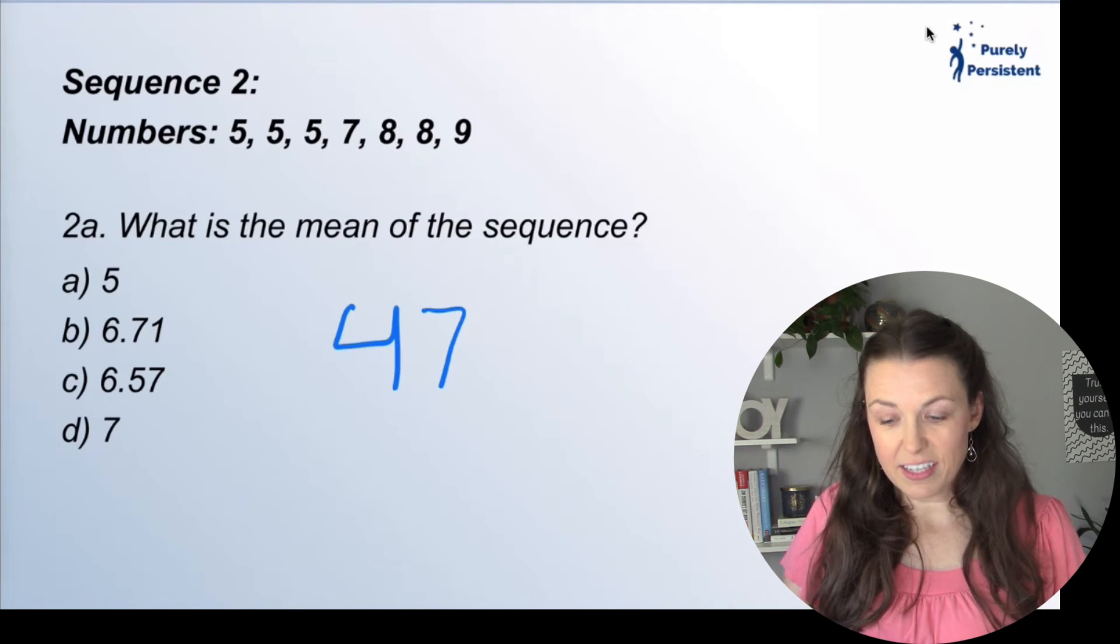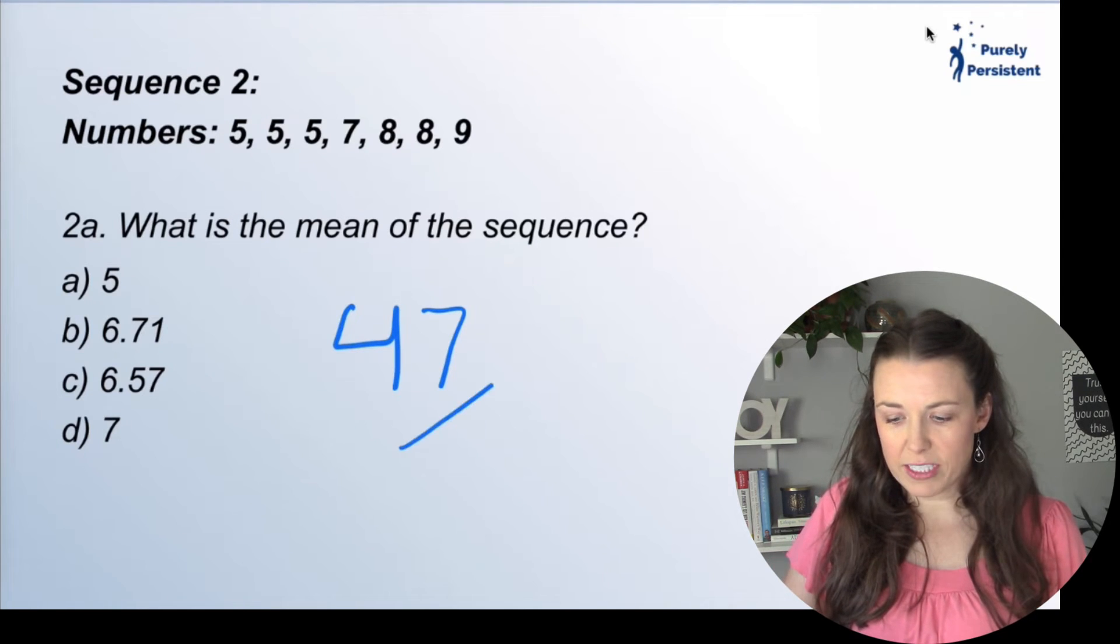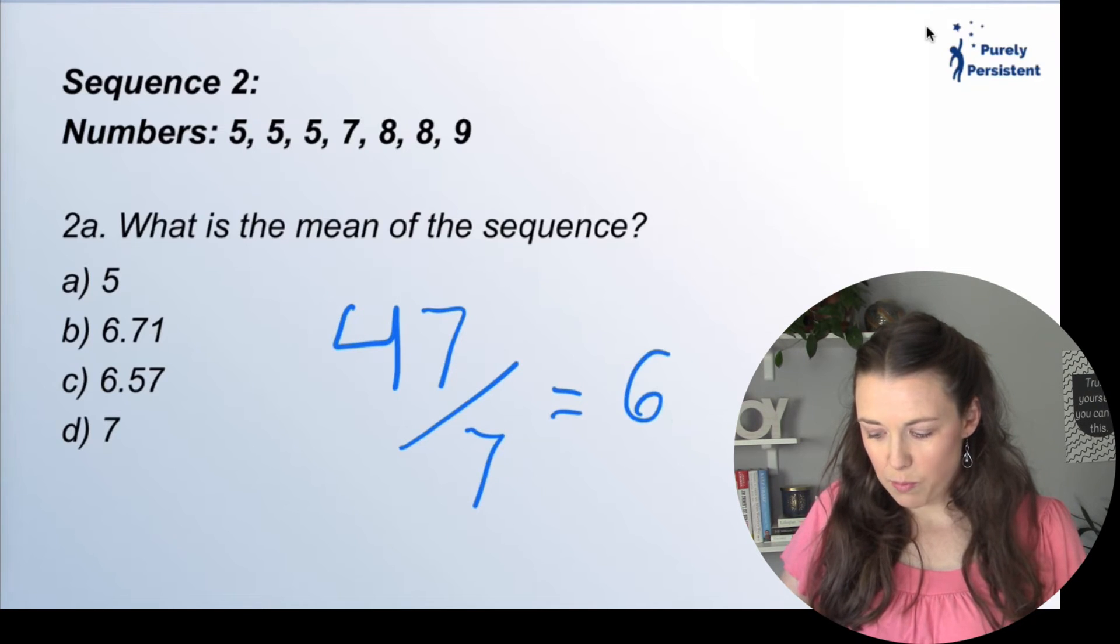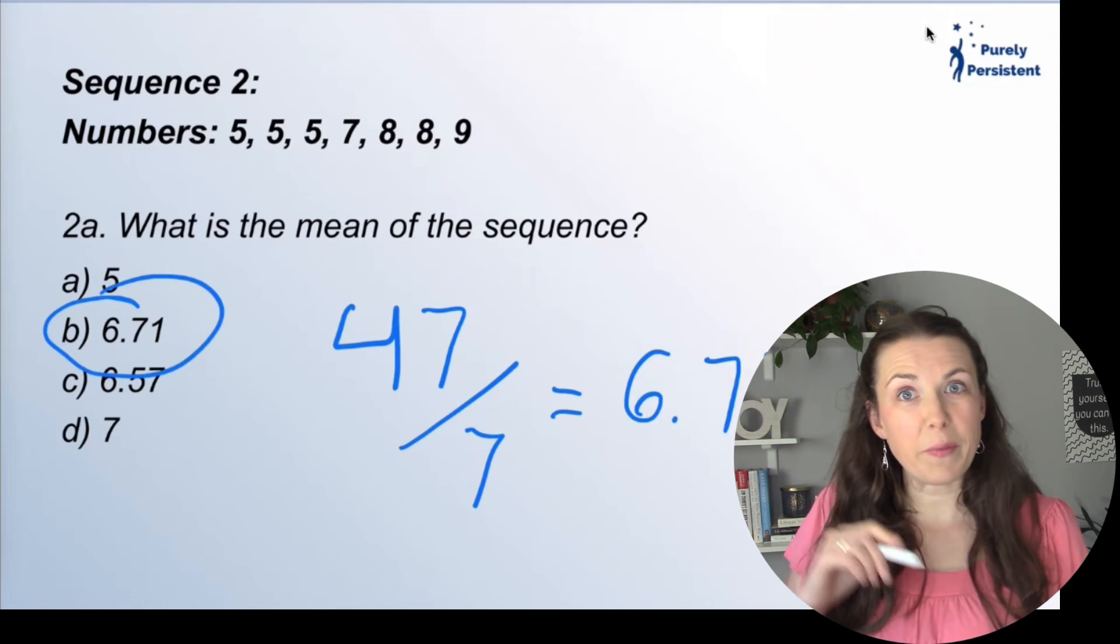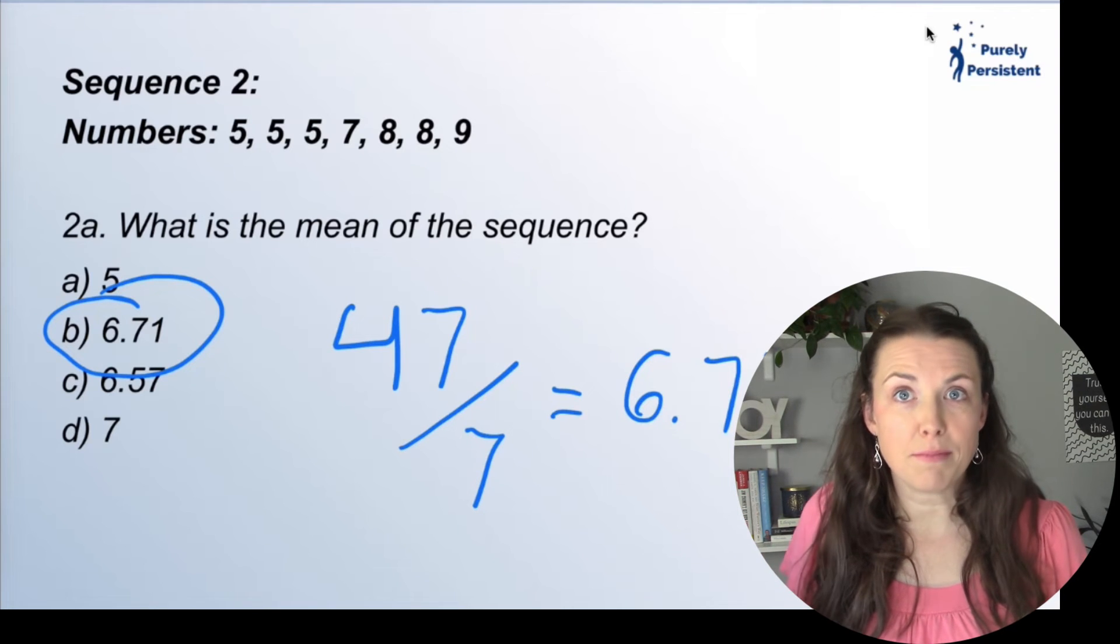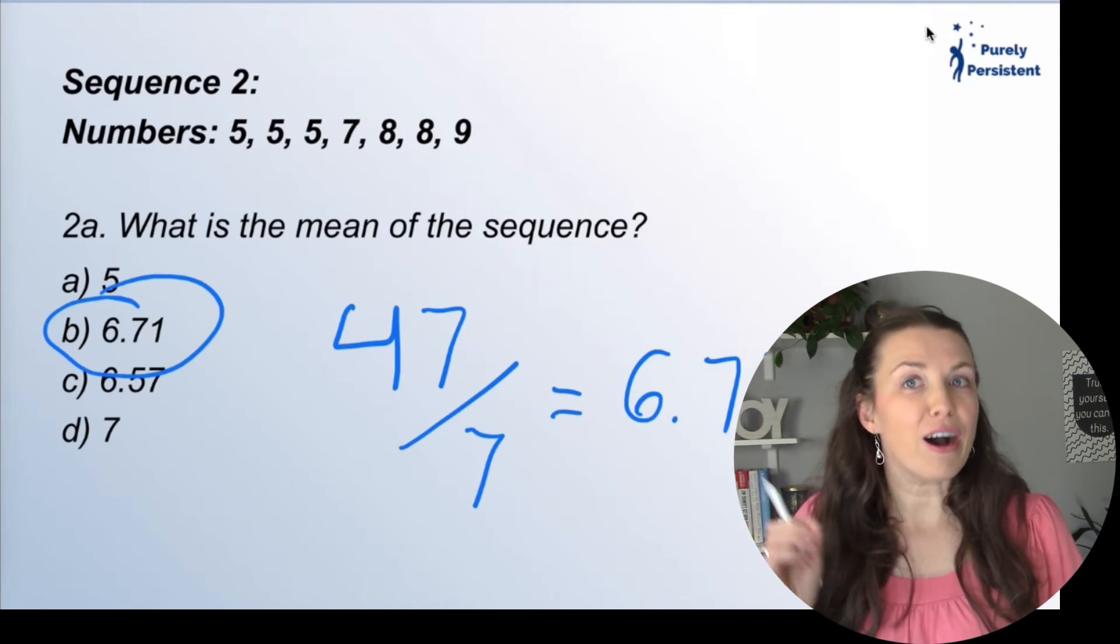So I'm going to take 47, divide that by seven, and I get 6.71. And here we go. B is my answer. That is the mean or the average of this sequence.